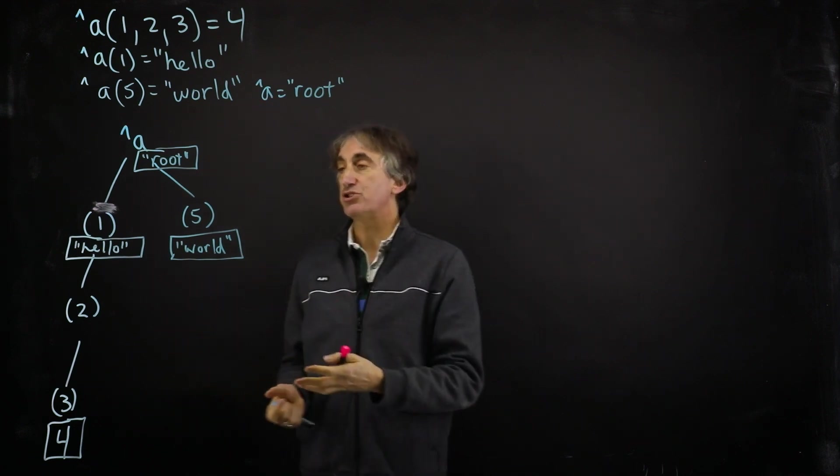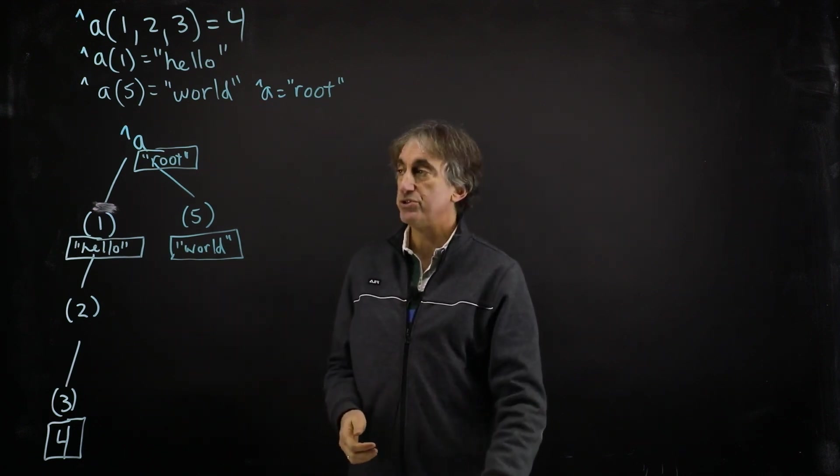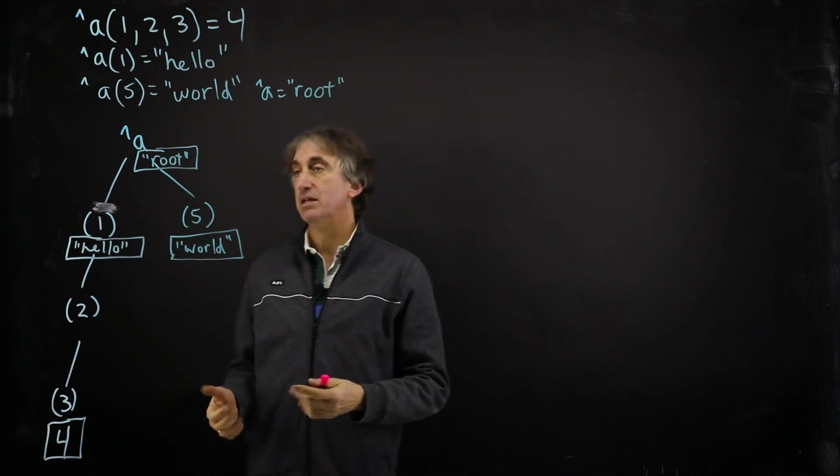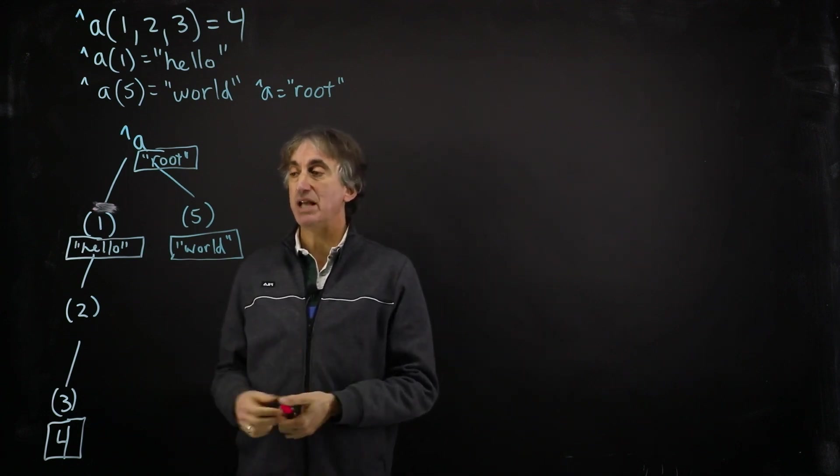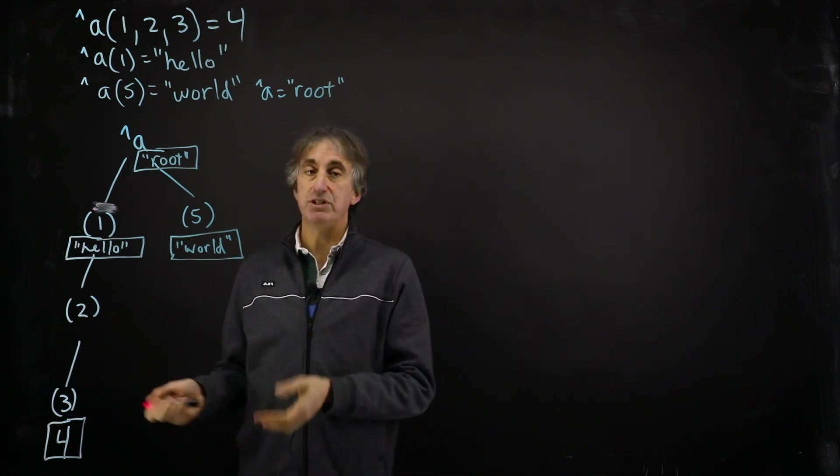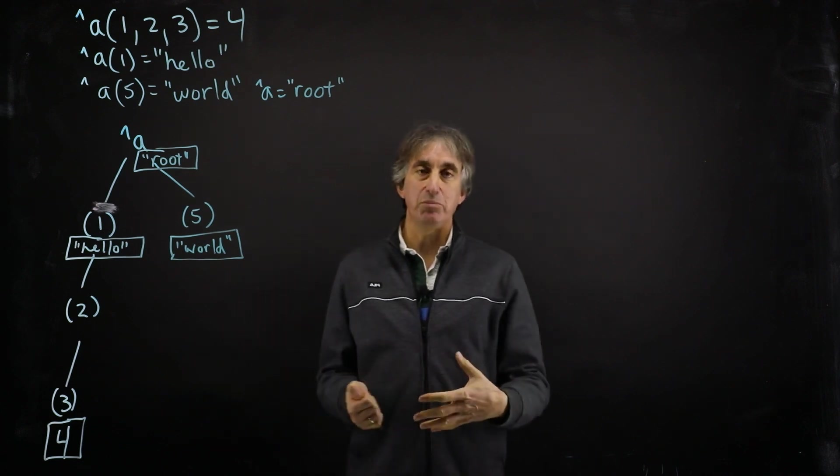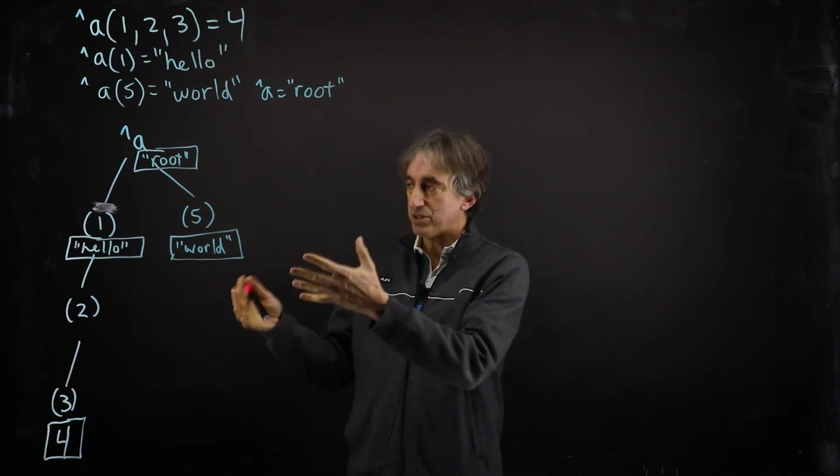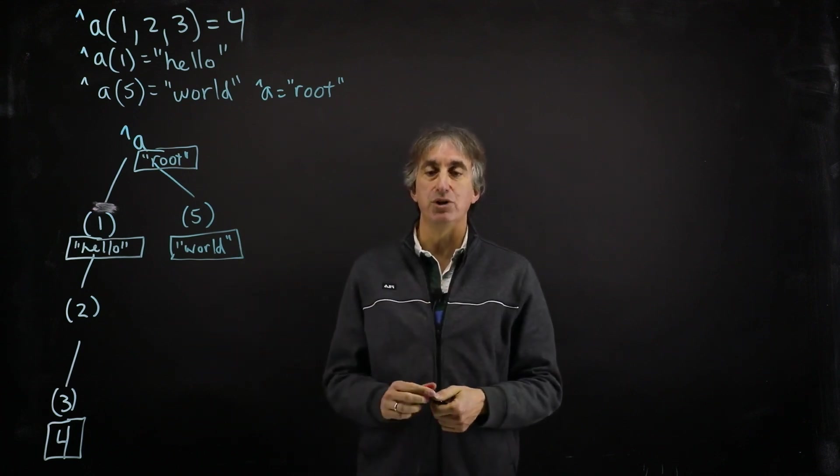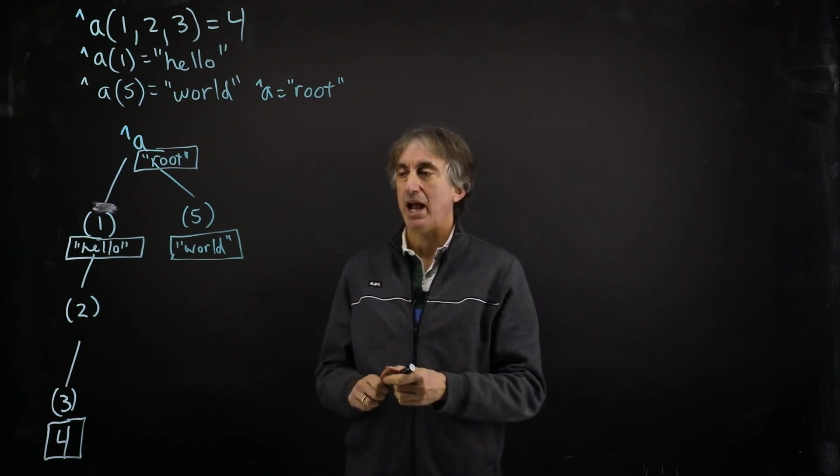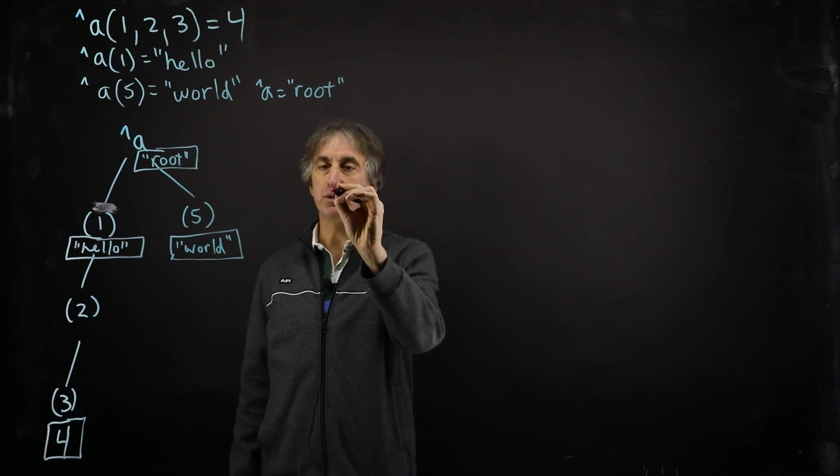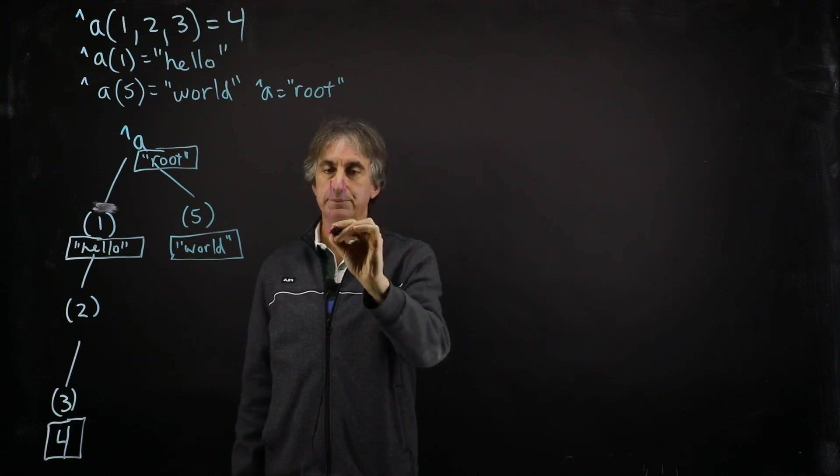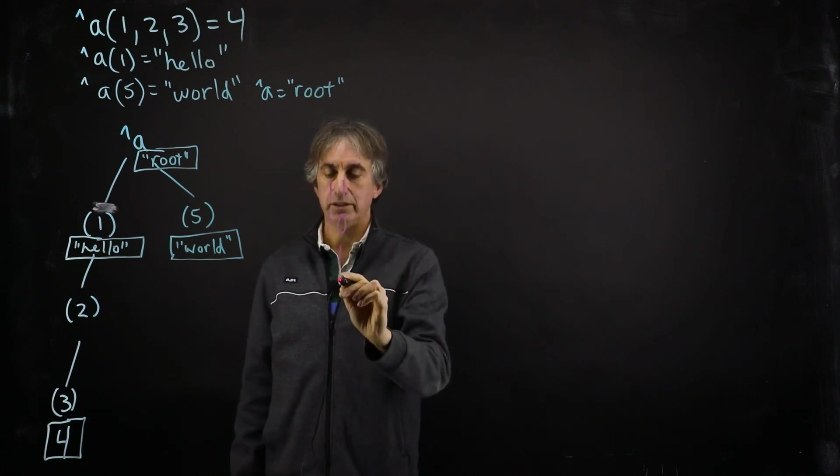Now, as you can see in this tree, some nodes have data only. Some nodes have data and descendants. And some nodes have descendants only. The native API provides another method called isDefined that basically tells you what's going on at any node in the tree. And it does that by returning values 11, 10, 1, and 0.